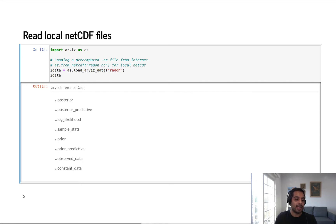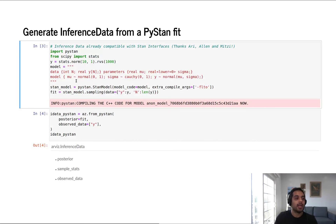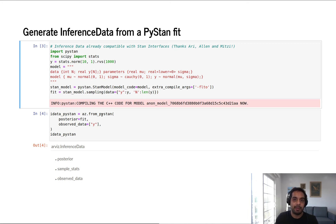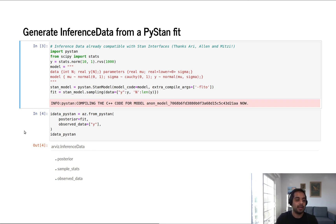Having all this helps us a whole bunch, as we'll see. To generate an inference data object from PyStan, here's the code in Python — here are our observations that we've simulated, here's our Stan model. We run the fit using the Stan interface, and then using ArviZ's from_pystan method, we pass in the posterior and the observed data, and we get out the sample statistics, the observed data, and the posterior. This particular analysis was simpler so all the groups weren't required. But this is the idea of inference data — it's meant to fit anywhere in your MCMC Bayesian workflow.